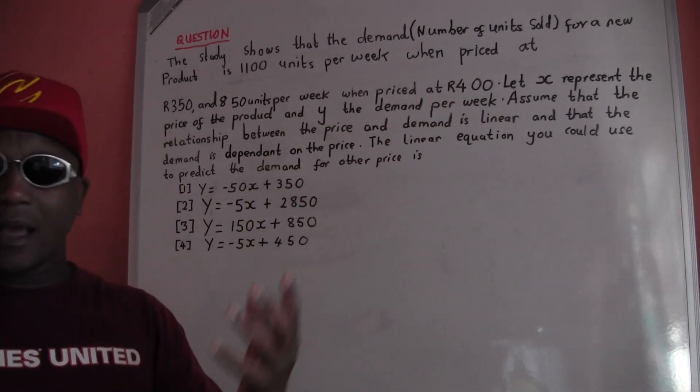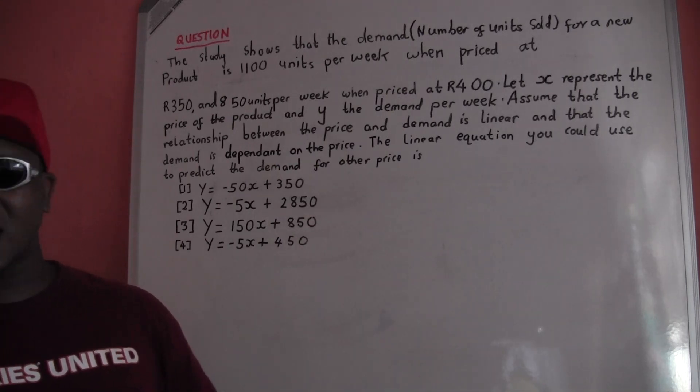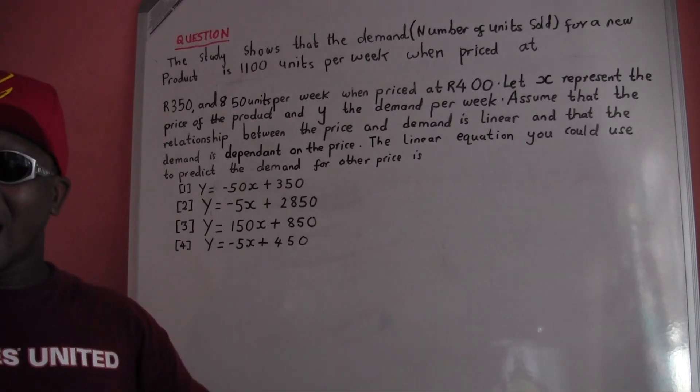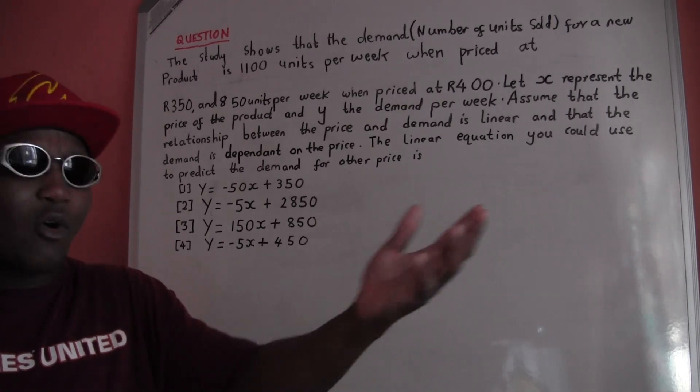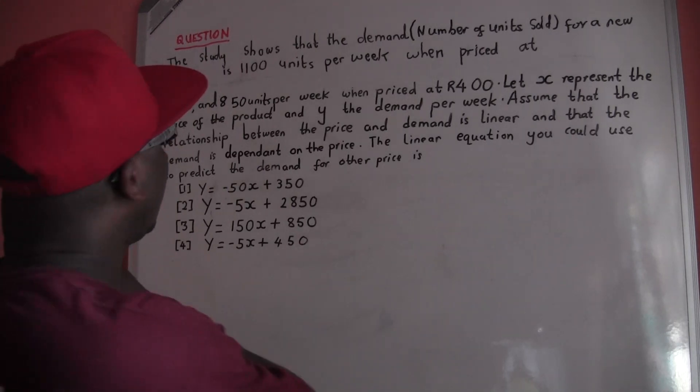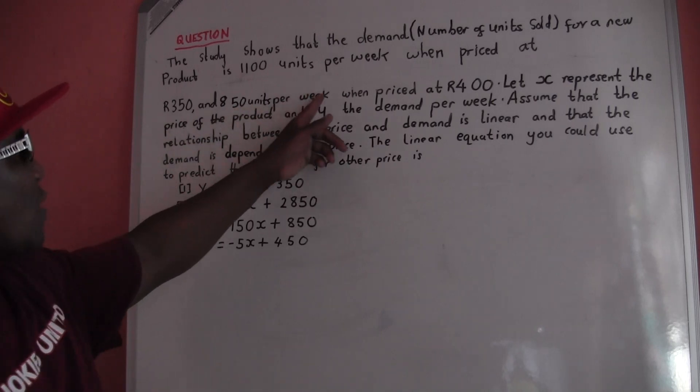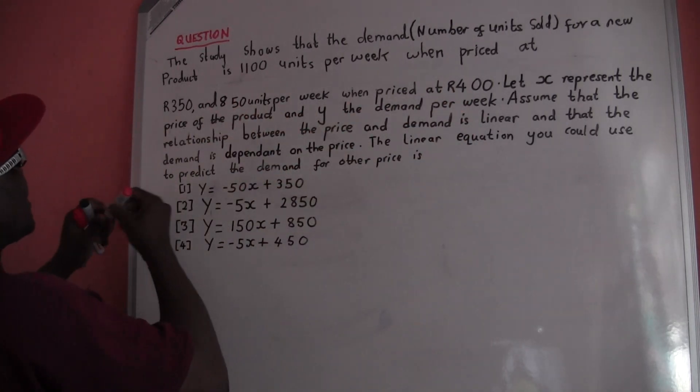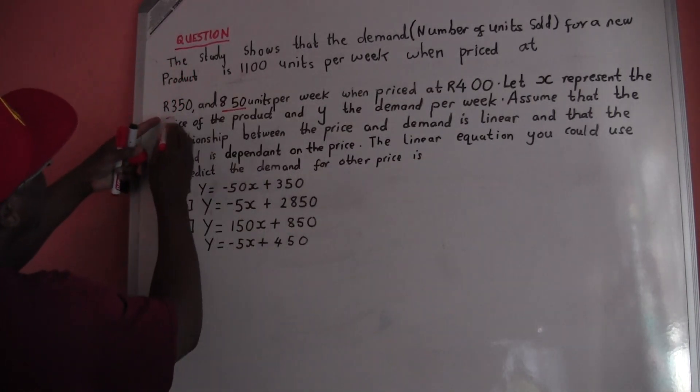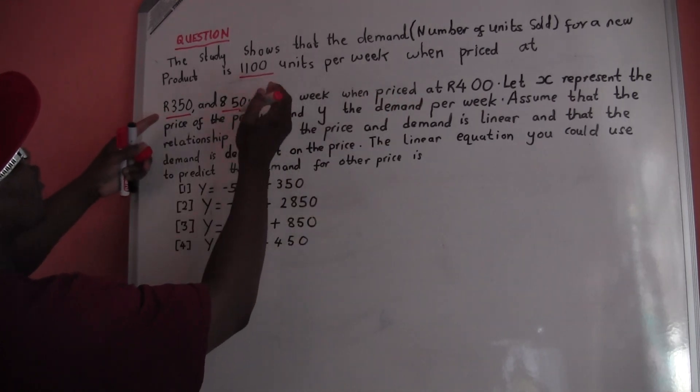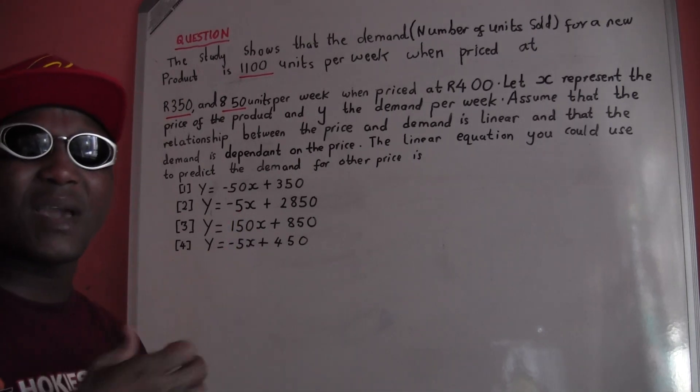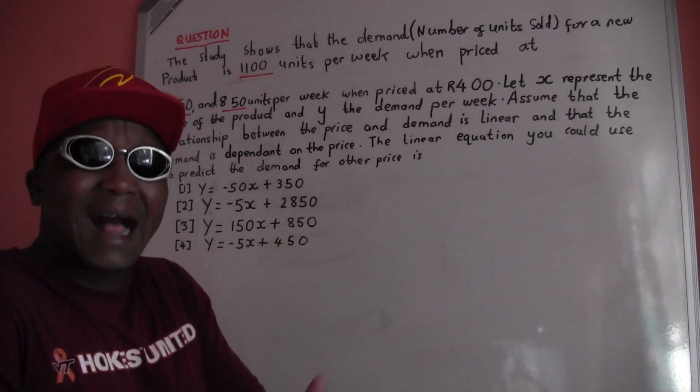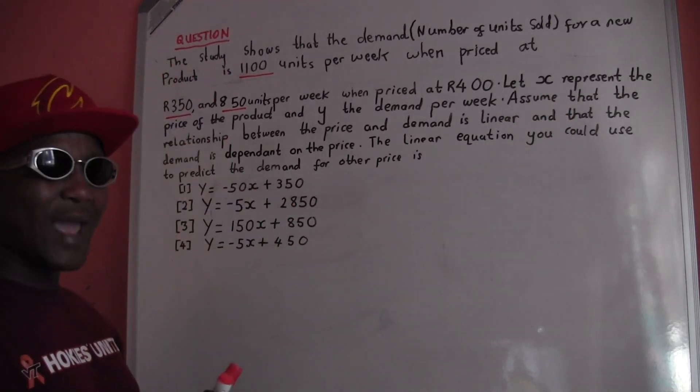If a lot of people buy, the demand gets higher and then I may increase - now I'm going to sell for 350 rand. And they say the demand gets lost, so the demand is like the sales. That's why you have to see a number of units sold - how many units are going to be sold. The study shows that the demand, or number of units sold for a new product, is 1100 per week when the price is at 350.